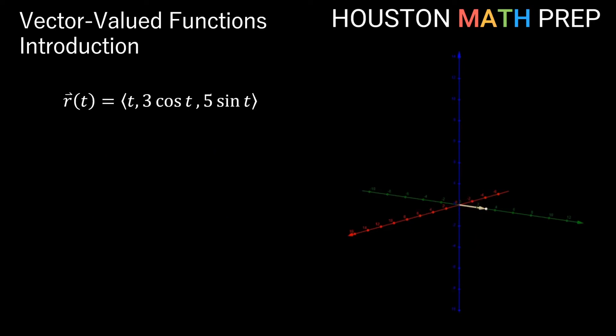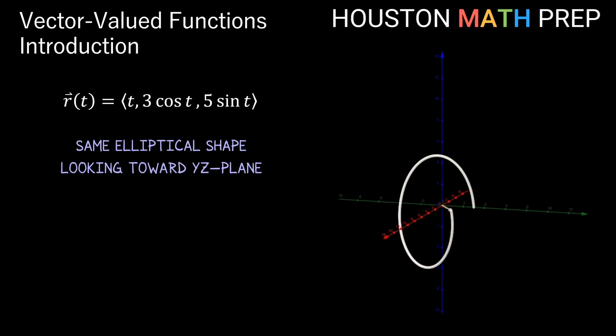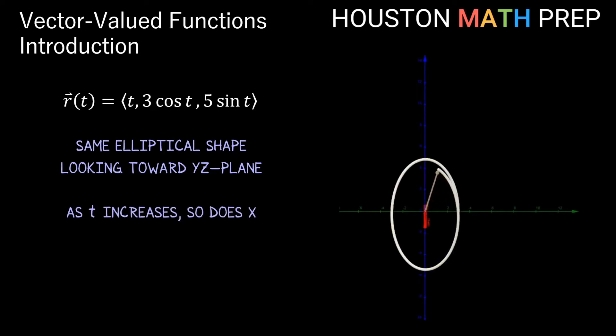If we leave the y and z components of our vector-valued function alone and change the formula for the x component to something like t, think about what this does to our path in space defined by the function. When we're looking straight on toward the yz plane, the path will still look like an ellipse.